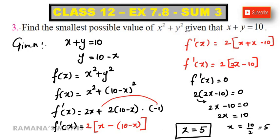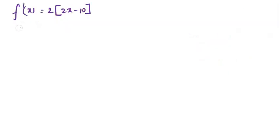Now find f double dash of x. The derivative of 2x is 2, so f double dash of x is equal to 4.